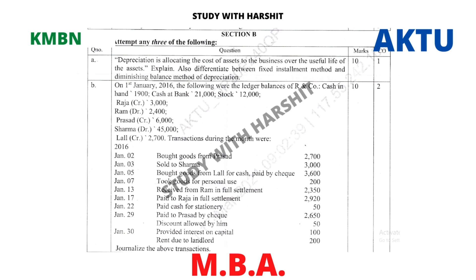Question B: On 1st January 2016, the following were the ledger balances of R and Company — cash in hand, cash at bank 21,000, stock 12,000. This is a numerical question.